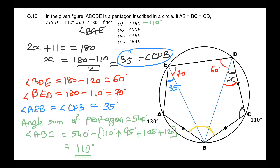So angle CDE is 60 plus 35, which equals 95 degrees. And angle AED is 70 plus 35, which equals 105 degrees — both of which we already have in the figure.